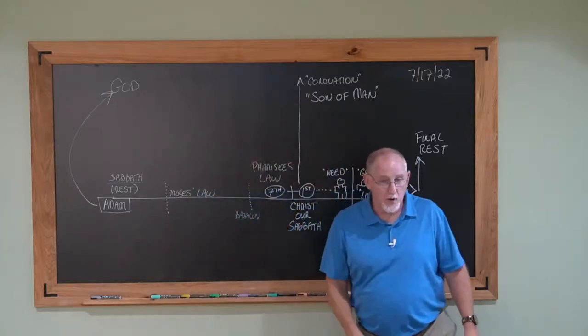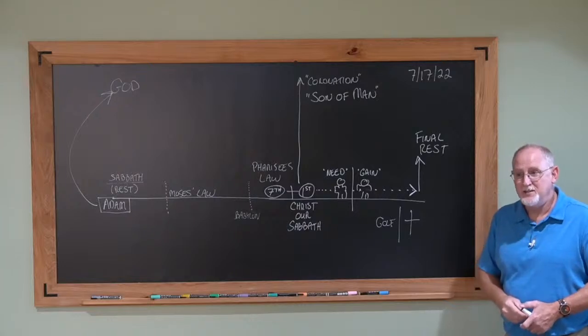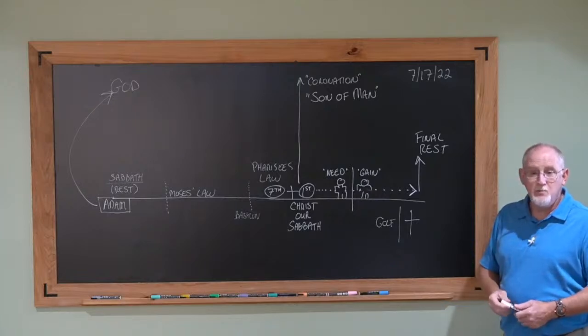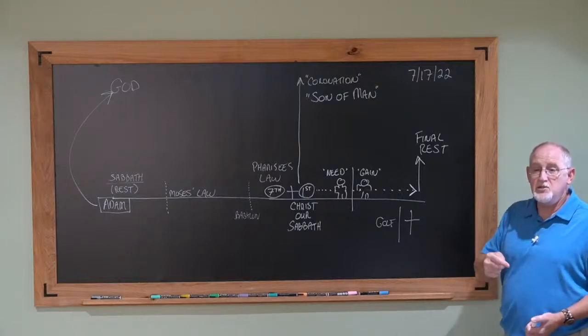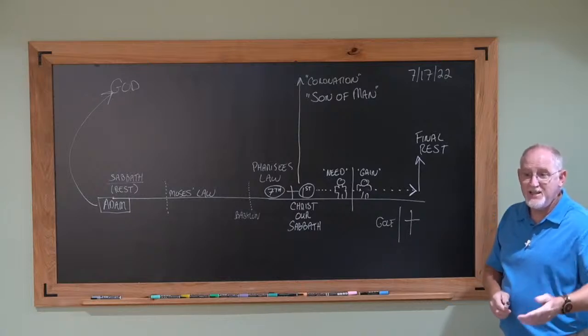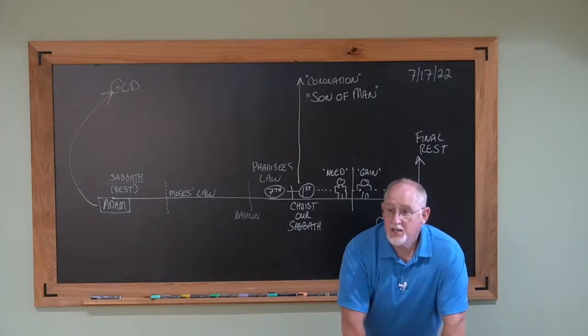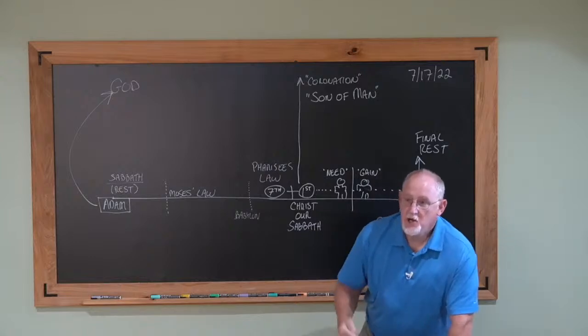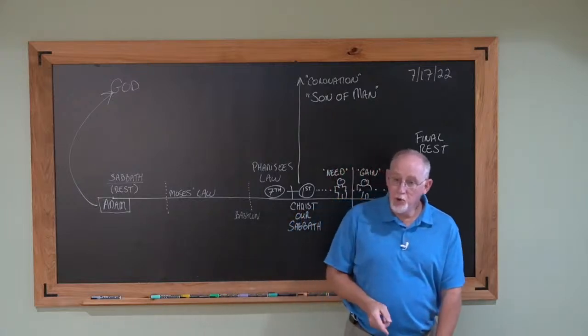We're told that He counted where He was at, His position, His glory. He counted it not a thing to be grasped, to be hung on to. In other words, He had the right and the privilege to hang on to what He had because it was everything. And yet, what did He do? He gave it up to come down here and do this. And now, I'm going to stand before Him over here and say, well, I would have worshipped you, but it meant giving up golf. How could that person say they're not guilty?